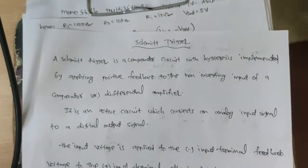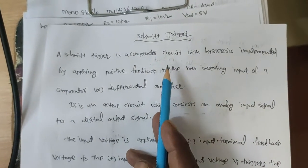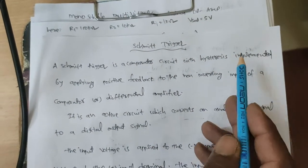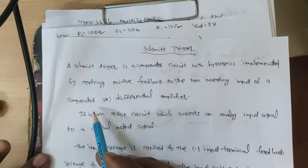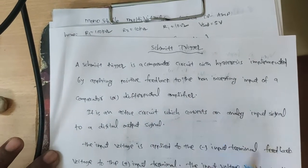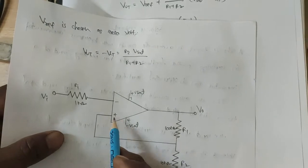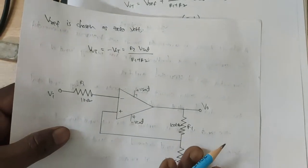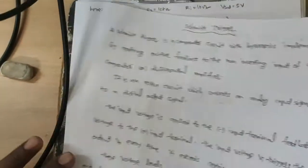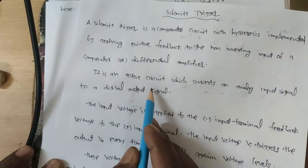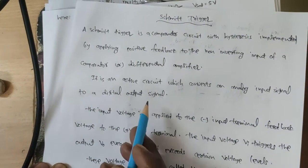What is the Symmetric Trigger? A Symmetric Trigger is a comparator circuit with hysteresis implemented by applying positive feedback to the Non-Inverting input of a comparator or differential amplifier. The positive feedback is given to the Non-Inverting terminal of the comparator. It is an active circuit which converts an analog input signal to a digital output signal.